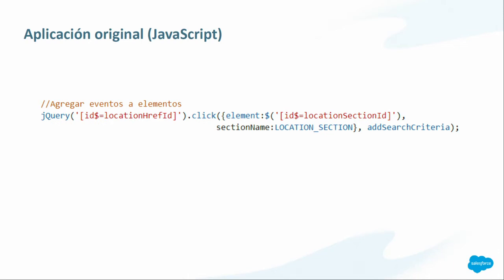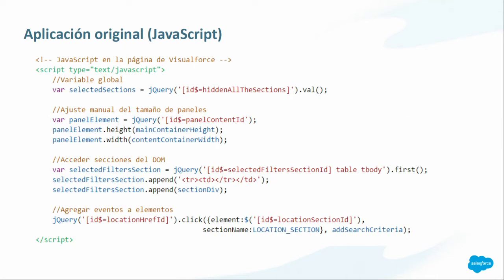Otra práctica de JavaScript fue agregar manualmente los eventos que necesitábamos en nuestra página. Por ejemplo, si el usuario tenía que seleccionar los criterios ya elegidos para borrarlos, nosotros decíamos: cada vez que hagan clic en ese elemento, se va a ejecutar una función de JavaScript. Y por último, tenemos un trozo de código limitado por etiquetas script. Esto es lo que se conoce como inline scripting dentro de una página Visualforce, y esto es algo que va a ser imposible de tener una vez que migremos a Lightning. Todas estas cosas las necesitábamos para tener la aplicación lista pero son cositas que se nos pasaron en el camino.